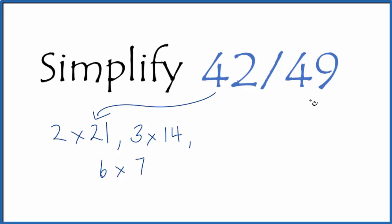How about 49? We'd have 1 times 49, and then the only other thing is 7 times 7. So the common number here, the common factor between 42 and 49, that's 7.